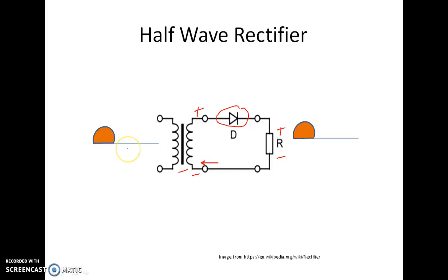In negative half cycle, since the anode of the diode is connected to negative, the diode becomes off and it acts as open circuit and hence you have no output in this cycle.